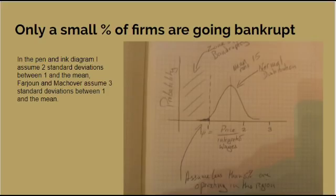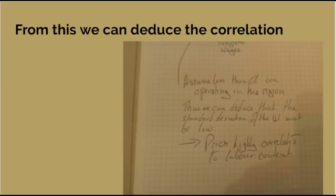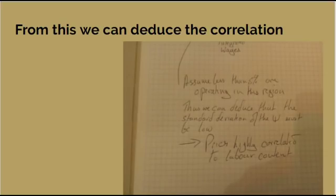From this, Farjoun and Machover predicted what the standard deviation of the normal distribution was going to be, and from that they could calculate what the expected degree of correlation between prices and labour content was going to be. They predicted the sort of high correlation that was actually observed. All the empirical studies cited earlier occurred after Farjoun and Machover had made these predictions, so it is therefore a very strong scientific prediction — quantitative, allowing for empirical testing, and found to be true.